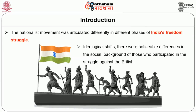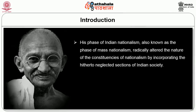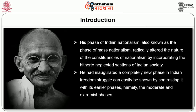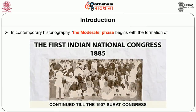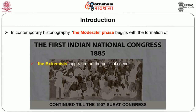The nationalistic movement was articulated differently in different phases of India's freedom struggle. Apart from ideological shifts, there were noticeable differences in social background of those who participated in the struggle against the British. The Gandhian phase of Indian nationalism, also known as the phase of mass nationalism, radically altered the nature of the constituencies of nationalism by incorporating hitherto neglected sections of Indian society. In contemporary historiography, the moderate phase begins with the formation of the Indian National Congress in 1885 and continues till the 1907 Surat Congress, from where the extremists appeared on the political scene.